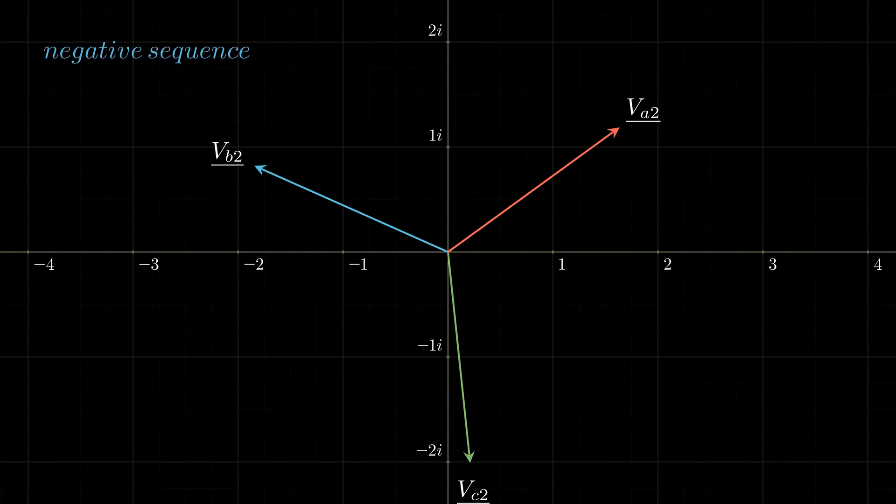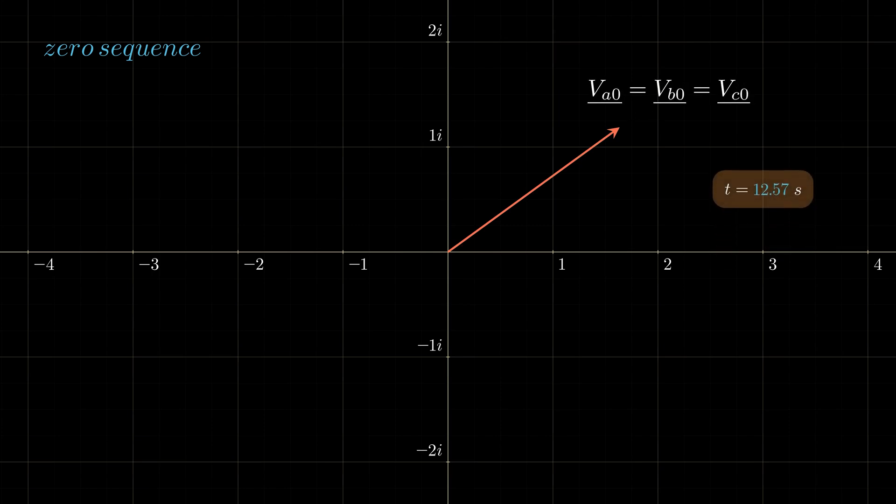The last balanced system is called the zero sequence, indicated by the subscript 0. This one is not truly balanced. It consists of three phasors equal in magnitude and in phase, rotating at the same speed. This sequence is called zero sequence because it is expected to be zero in normal operation when the system is balanced.